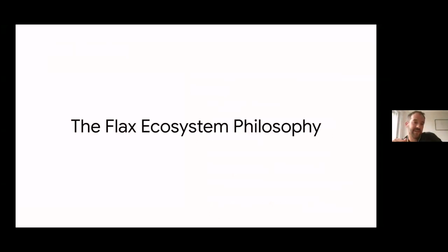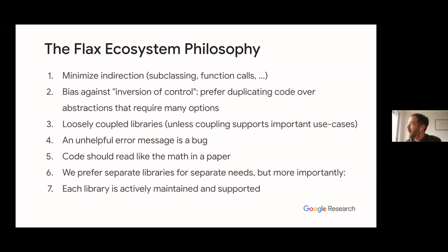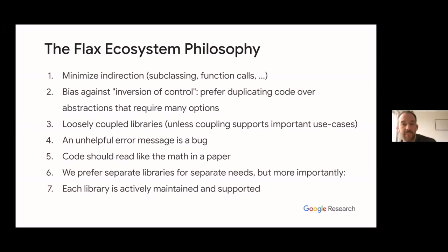Let me talk about the Flax ecosystem philosophy. Anyone who's worked with JAX is probably aware there have been many libraries built on top of JAX, and they usually end with X — Flax, Objax, Trax, and really a lot of them. While it can be a bit confusing, we believe this is essentially not a bug but a feature. We think it's healthy to have a number of JAX libraries that interoperate, and this really plays well with the compositionality of JAX transformations.